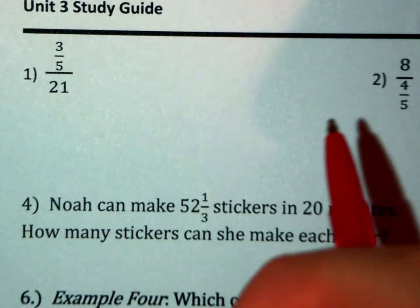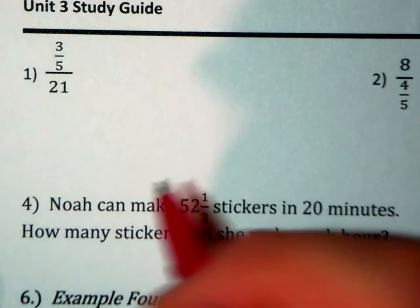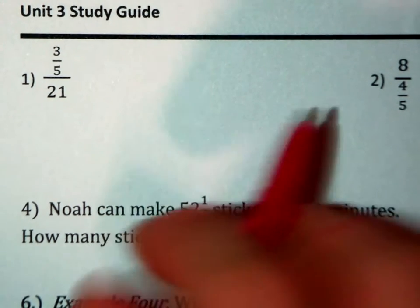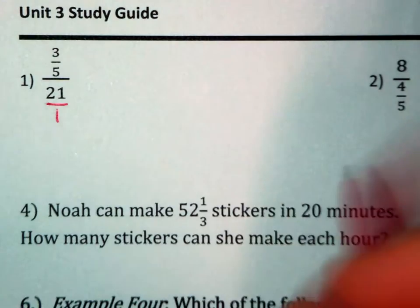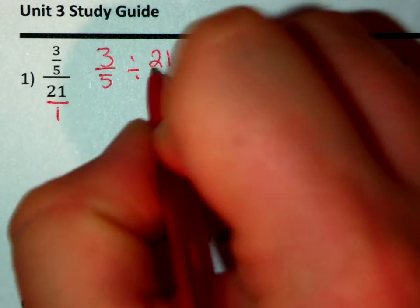Starting with problem number 1, 3 fifths divided by 21. Remember that 21 is a fraction, 21 over 1, so we end up with 3 fifths divided by 21 over 1.